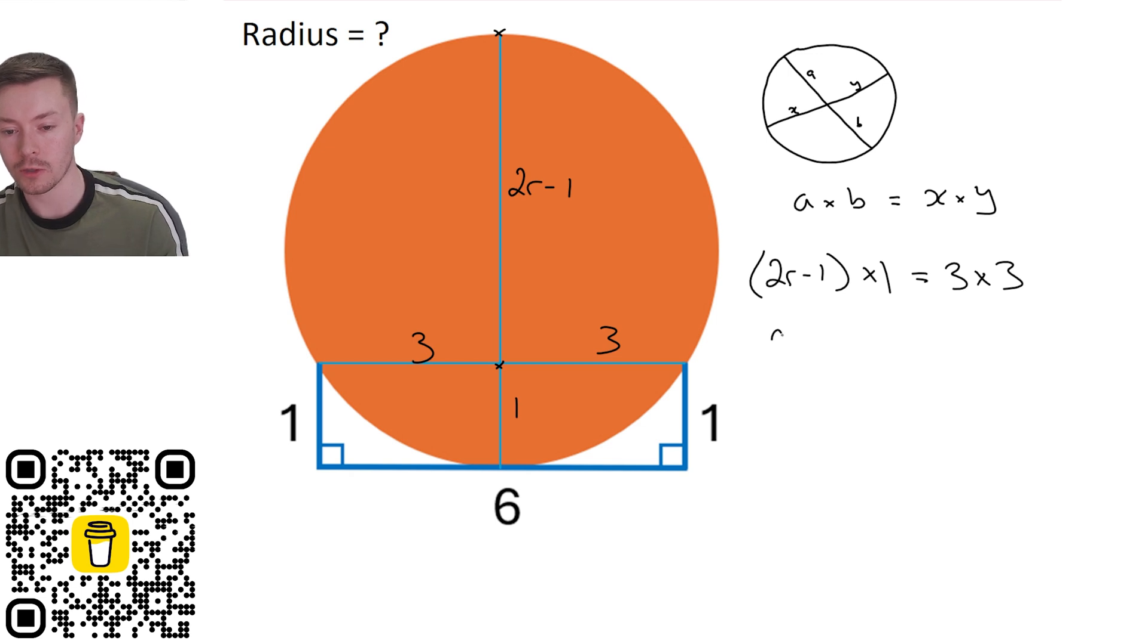OK, now that gives us 2R minus 1 is equal to 9. And now you can see where this is going. 2R is equal to 10. And then divide by 2. R is equal to 5.